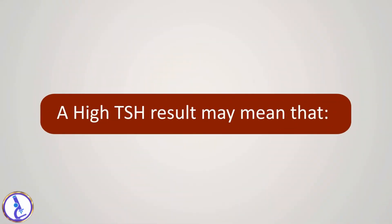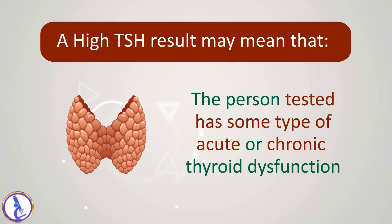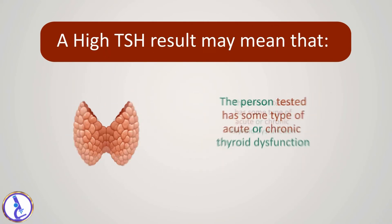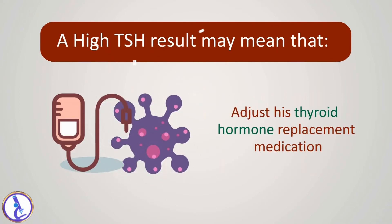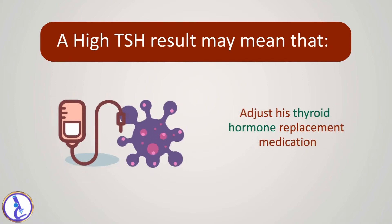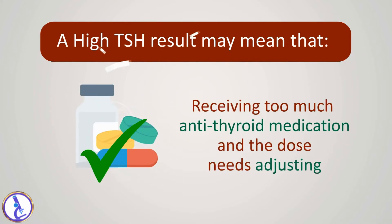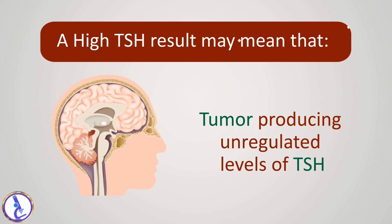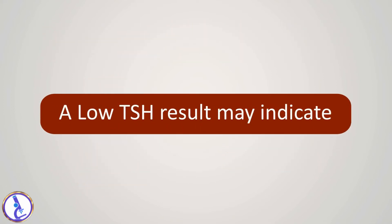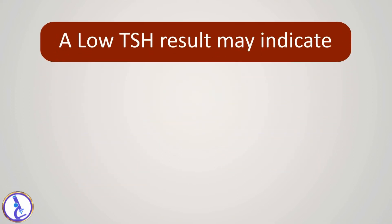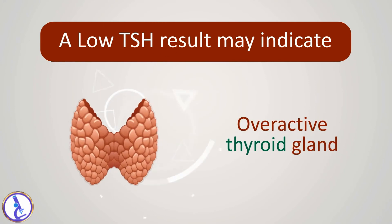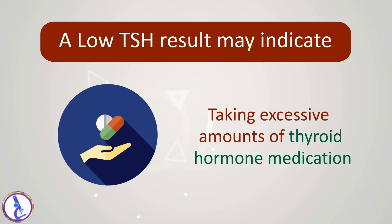A high TSH result may mean that the person tested has some type of acute or chronic thyroid dysfunction, or the affected person may need to adjust his thyroid hormone replacement medication, or the person with hyperthyroidism is receiving too much antithyroid medication and the dose needs adjusting, or there is a problem with the pituitary gland such as a tumor producing unregulated levels of TSH.